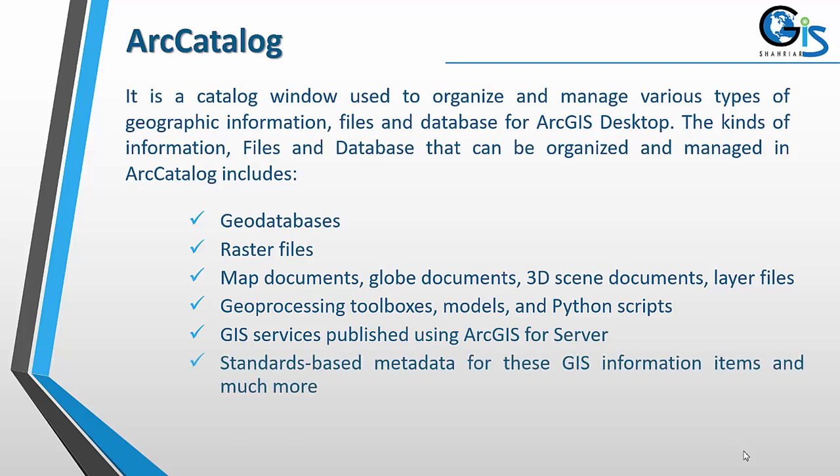The kinds of information, files, and databases that can be organized and managed in Arc Catalog include: geodatabase, raster files, map documents, globe documents, 3D scene documents, layer files, geoprocessing toolbox, models and Python scripts, GIS services published using ArcGIS for Server, and standard-based metadata for these GIS information items, and much more.